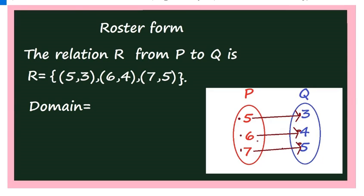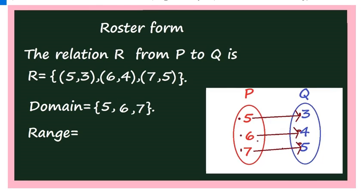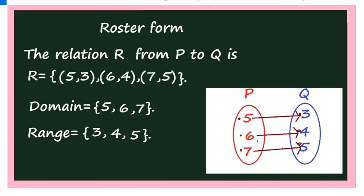Now, what is the domain? The first set itself is the domain, because all 3 elements have an image and all 3 elements occur as the first element. Therefore, domain = {5, 6, 7}. And what is the range? The collection of all second elements: 3, 4, 5. This is the range of the relation.